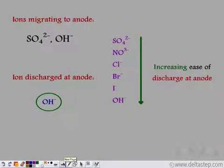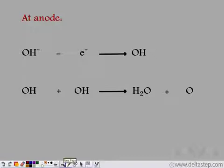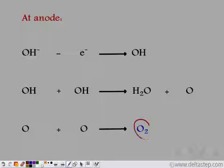Hydroxide ions get discharged at the anode. OH⁻, in order to become stable, loses one electron and forms OH. This OH species is not stable, so it reacts with another OH to form a water molecule and an oxygen atom. The oxygen atom on its own is also not stable, so it combines with another oxygen atom to form oxygen gas. So the product being formed at the anode is oxygen gas.